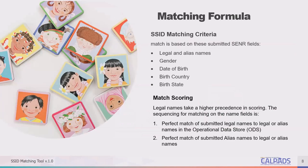Matching formula. The SSID matching criteria for the SSID match tool includes legal and alias names, gender, date of birth, birth country, and birth state. When looking at the match scoring, legal names take a higher precedence. The sequencing is: first, a perfect match of submitted legal names to legal or alias names in the CALPADS ODS; or following that, a perfect match of submitted alias names to the legal or alias names in the CALPADS ODS. There is extreme significance placed on matching the students' names.